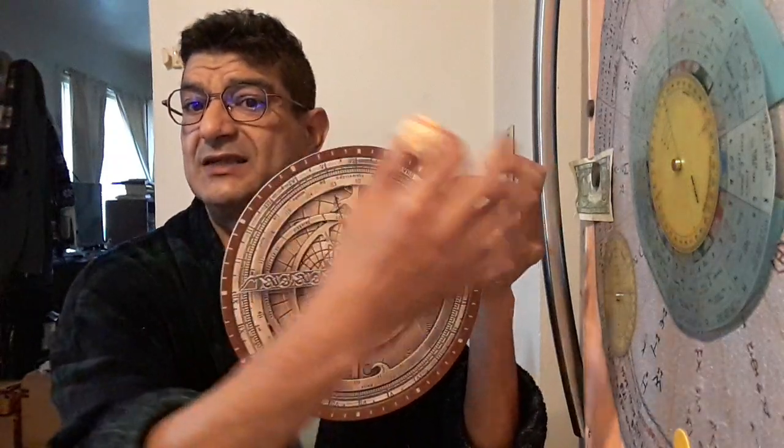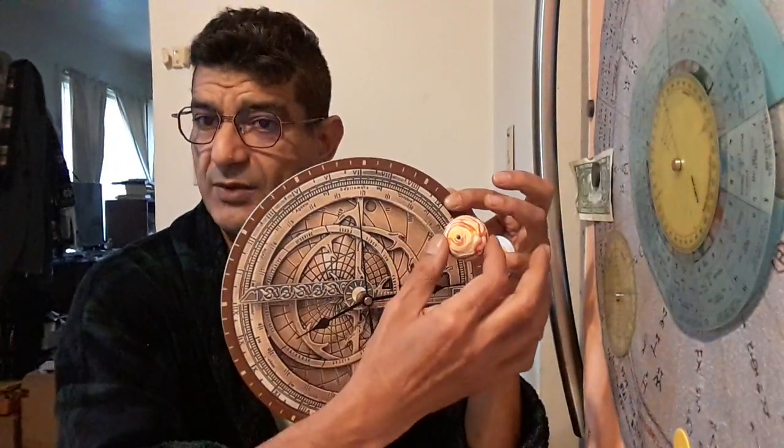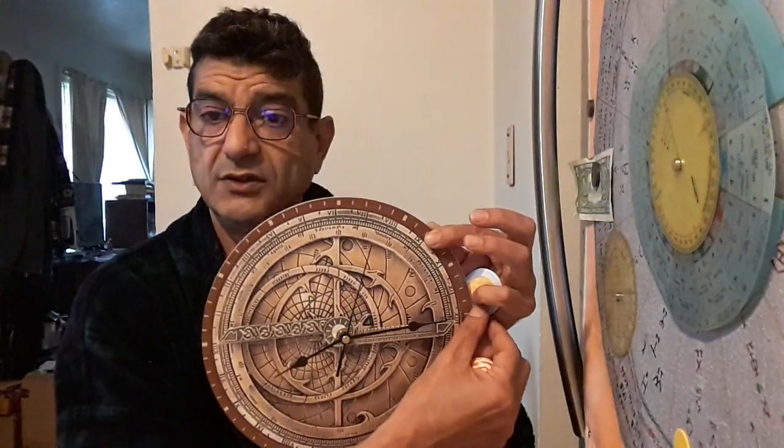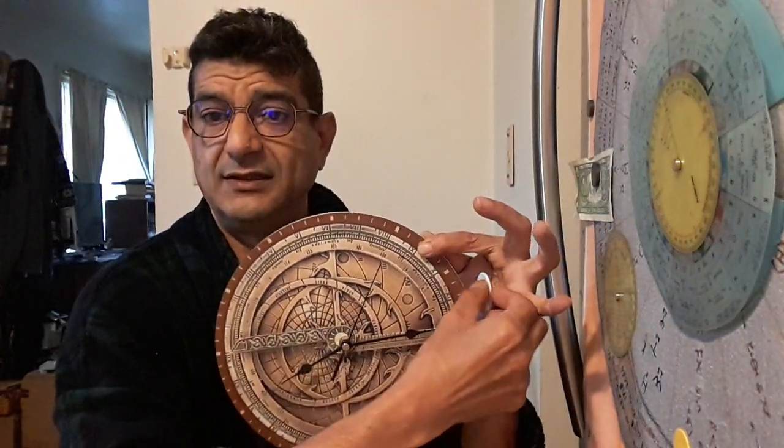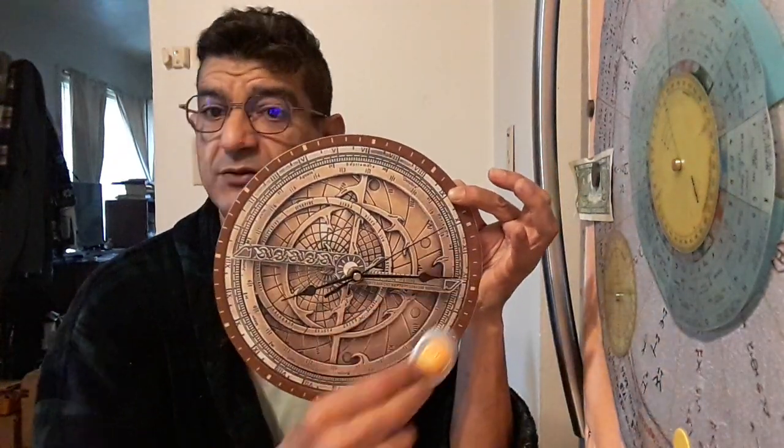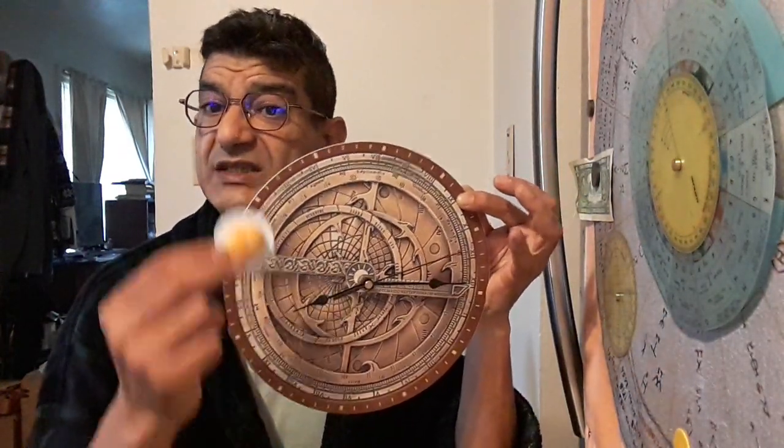For Jupiter, which determines the Chinese zodiac and which we could assign to the minute needle, it's 12 years to go around. For Saturn to do the same thing is 30 years to go around, and that would constitute the hour needle to count the long time.